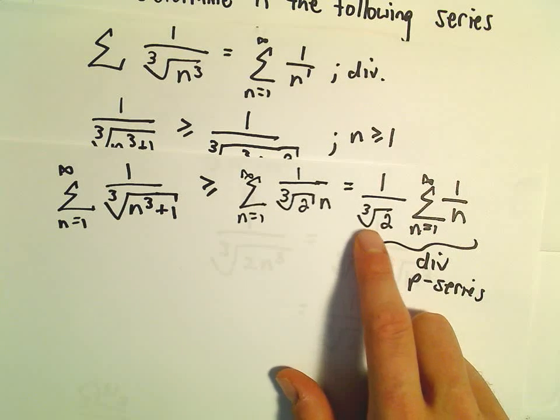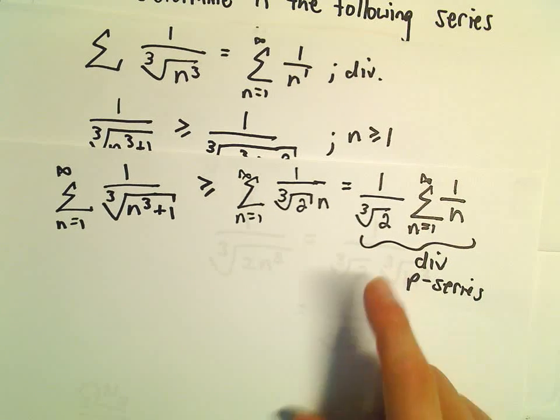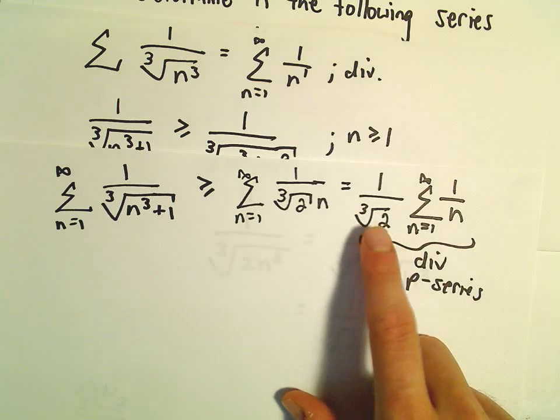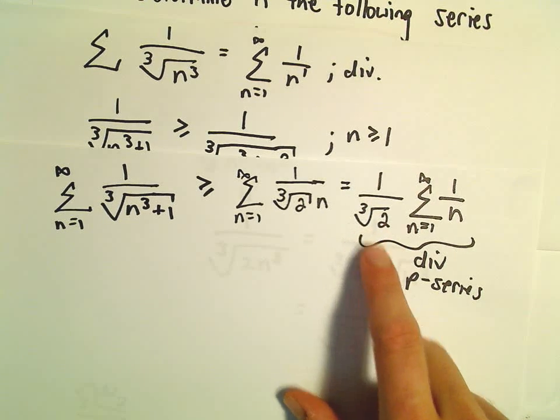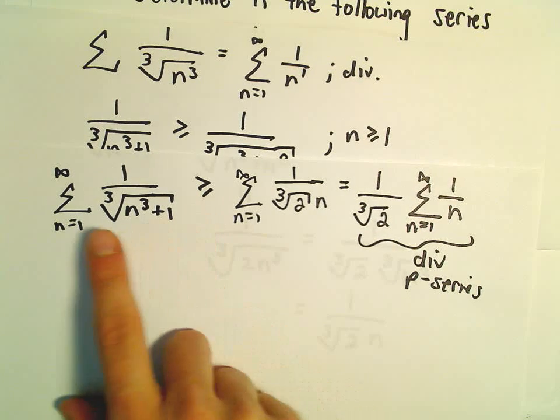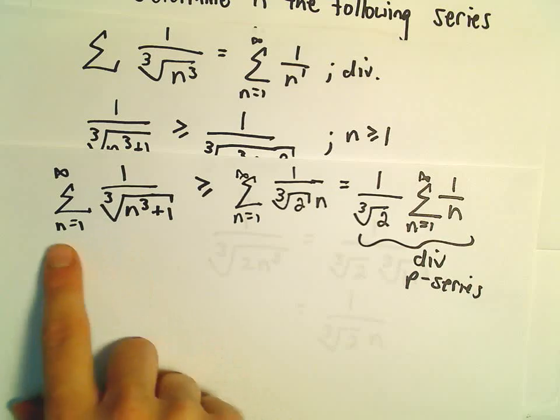Multiplying it by 1 over the cube root of 2, it's still going to be divergent. If this goes to infinity, and you multiply it by some positive finite number, it's still going to go to infinity. But now we've justified that our original series